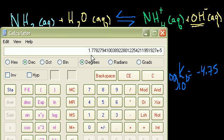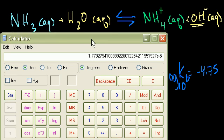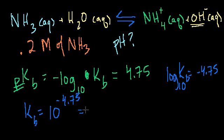So I'll bring out the calculator for that. So if we take 10 to the 4.75 minus. It equals 1.7. Let's just say 1.8 times 10 to the negative 5. This is equal to 1.8 times 10 to the minus 5.